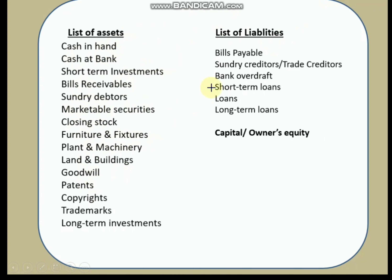Before starting journal entries, you have to understand what the usual assets are. The various assets to memorize include: cash in hand, cash at bank, short-term investment, bills receivable, sundry debtors, marketable securities, closing stock, furniture and fixtures, plant and machinery, land and building, goodwill, patents, copyrights, trademarks, and long-term investment.